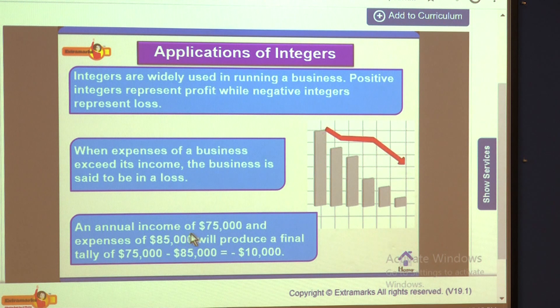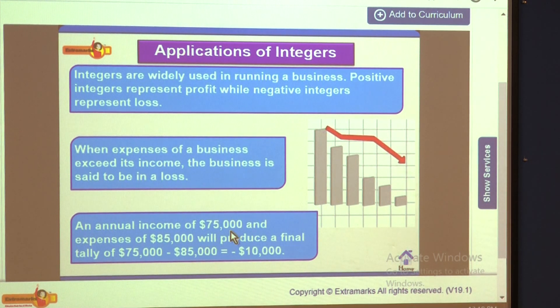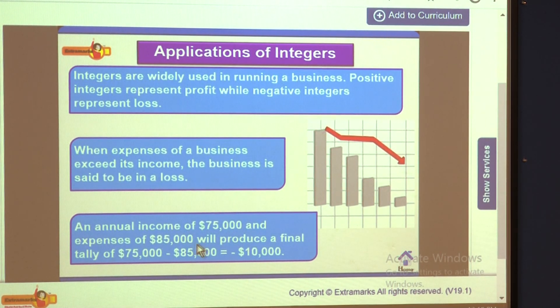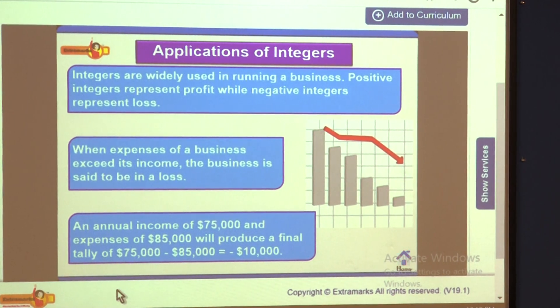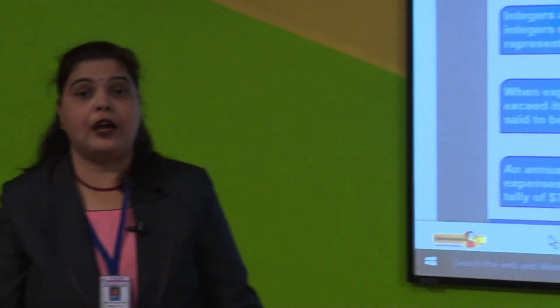So we should do the type of business where we get a profit, not a loss. My dear children, we now know where integers are applied in daily life. Today we learned all types of multiplication and division of integers and their properties, and also their real-life applications. I have summarized the whole chapter — now you just have to solve problems on your own. With practice, you will find all the sums very easy.